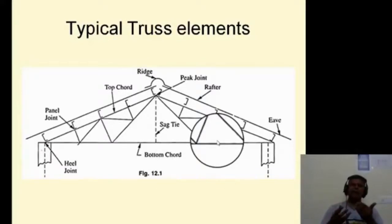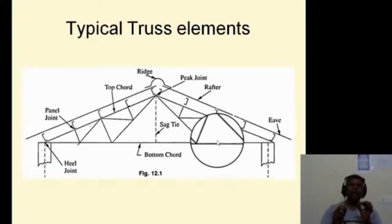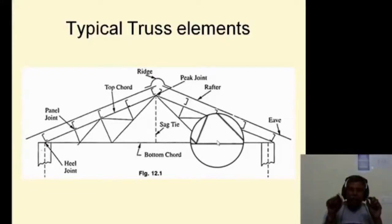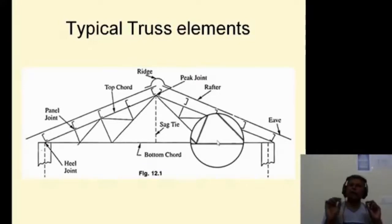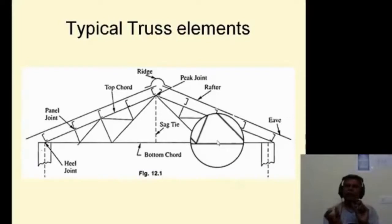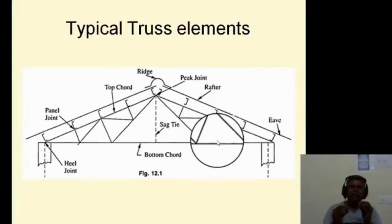The basic form of the truss is the triangle. The condition for a perfect frame is M equals 2J minus 3, where M is the number of members and J is the number of joints. For a triangle, M equals 3 and J equals 3, so 3 equals 2 times 3 minus 3, which is 3. Therefore, the perfect frame is the triangle.